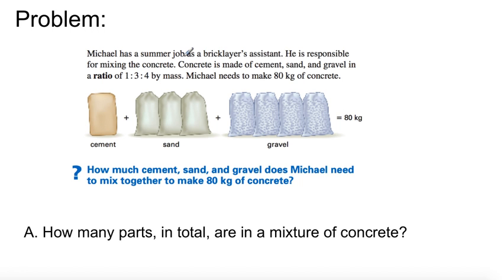Michael has a summer job as a bricklayer's assistant. He's responsible for mixing the concrete. Concrete is made of cement, sand, and gravel in a ratio of 1 to 3 to 4 by mass. Michael needs to make 80 kilograms of concrete.